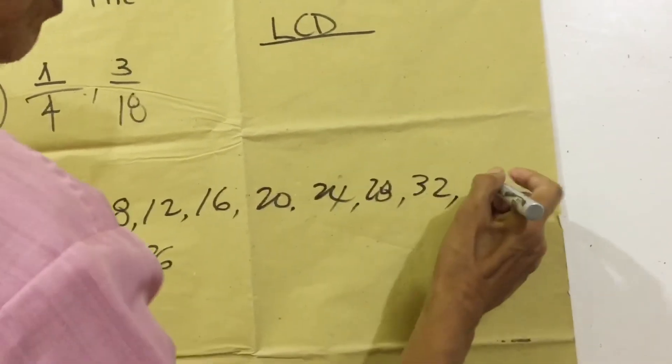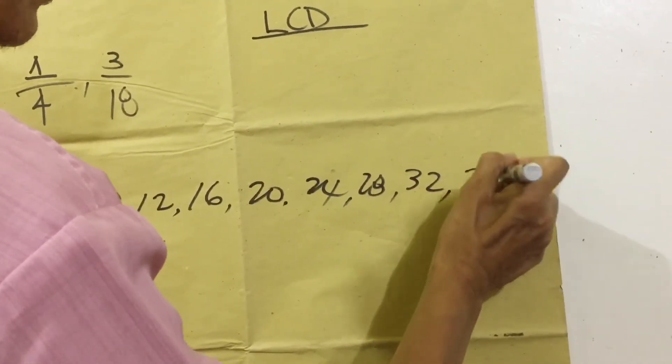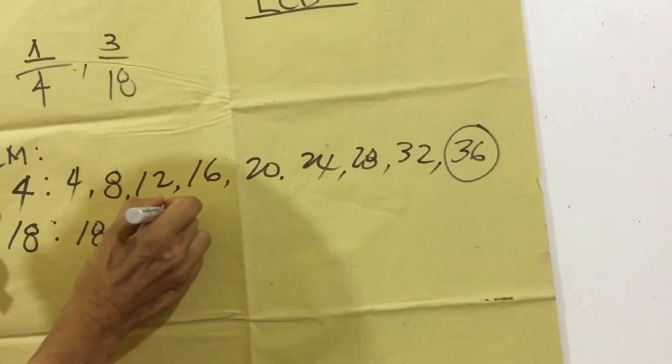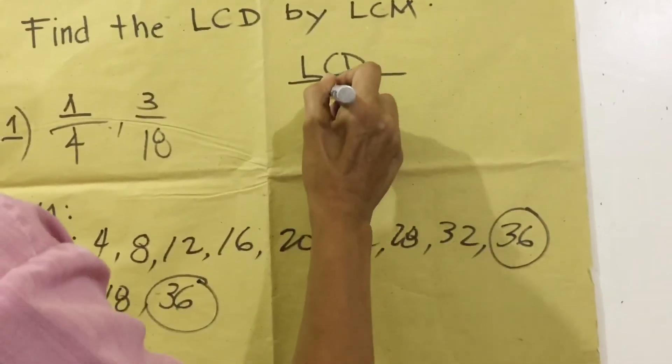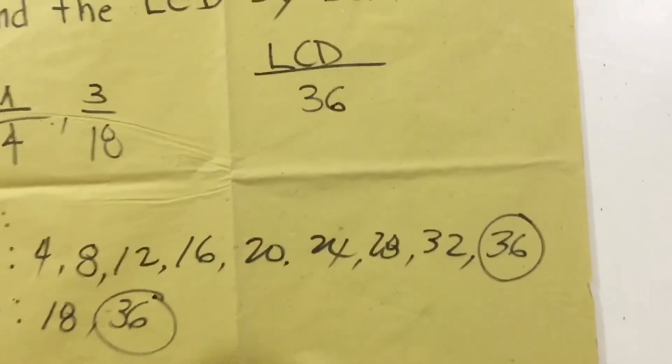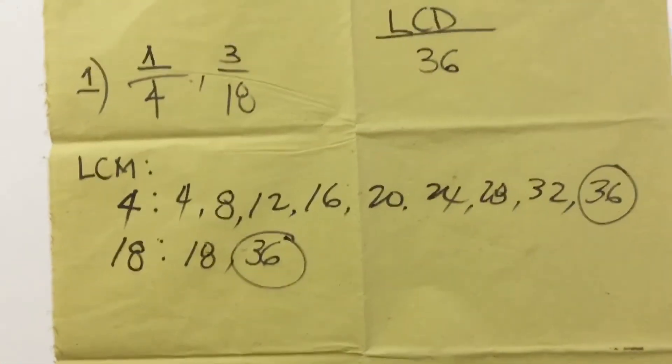And 32 plus 4 equals 36. So this is the least common multiple. Therefore, this is the LCD, 36. We call this the listing multiple of LCM.